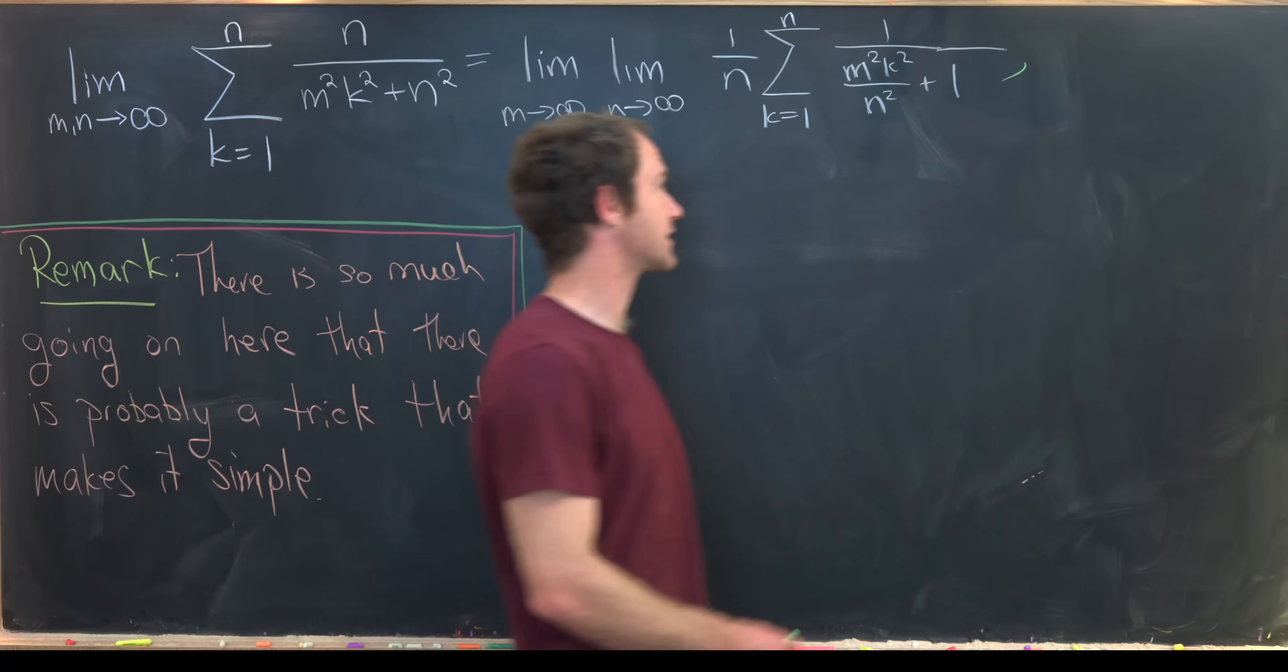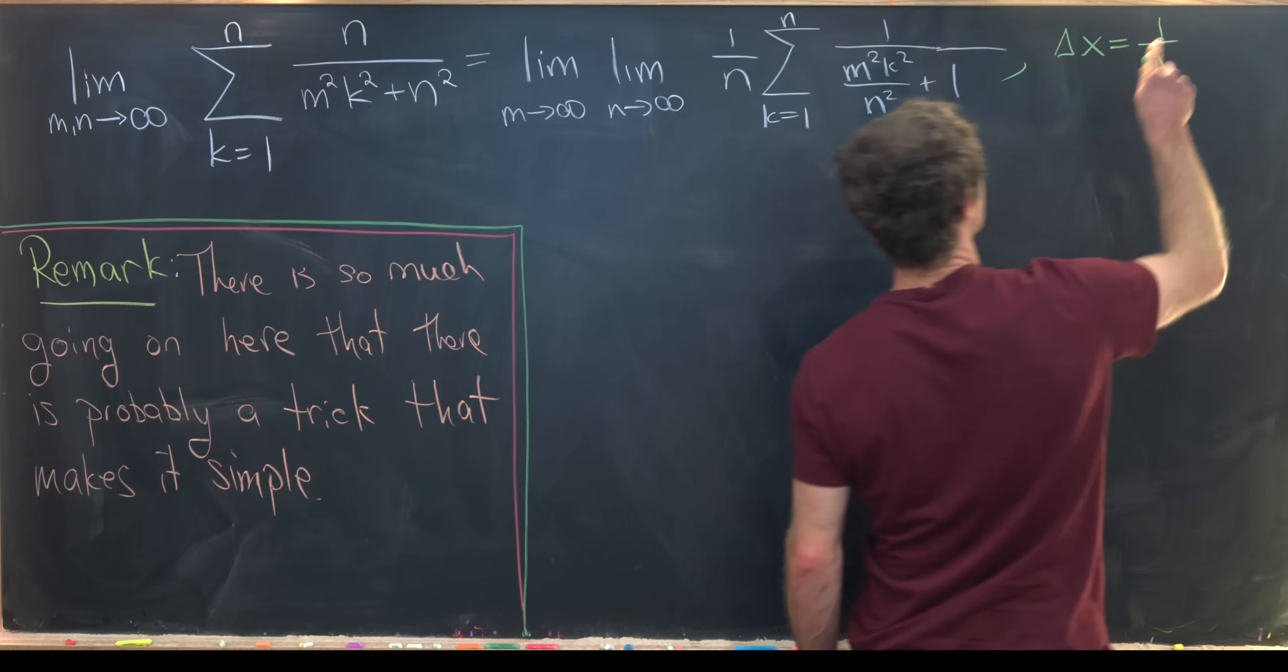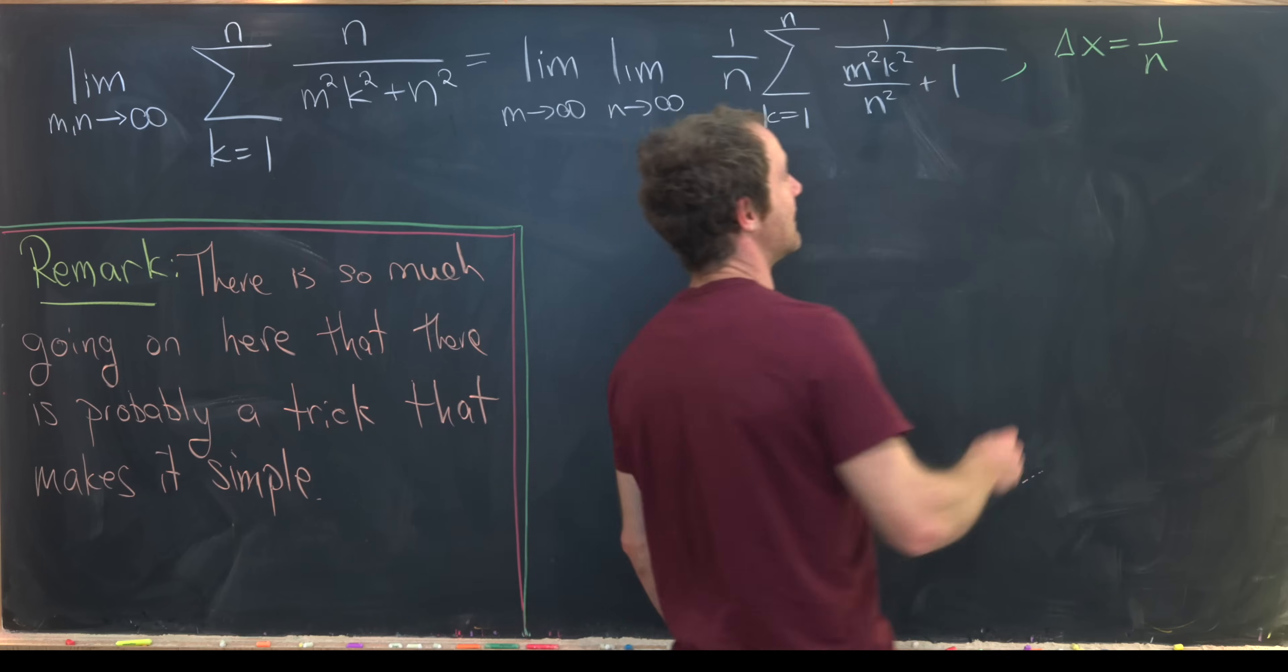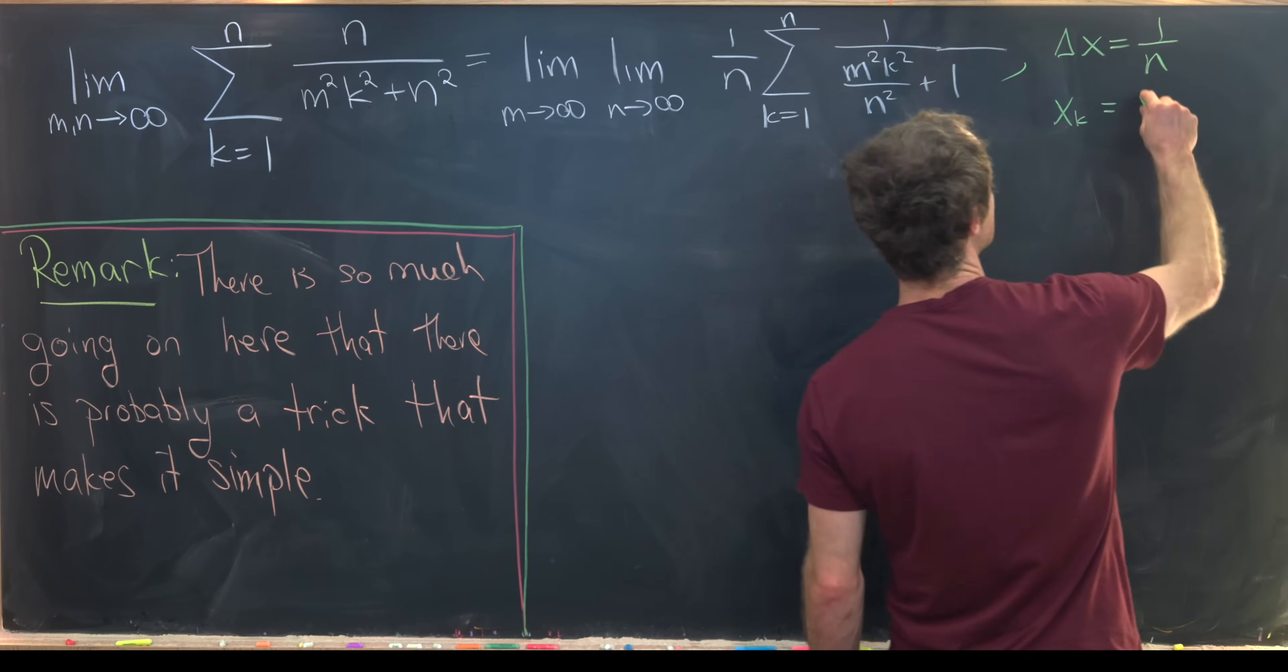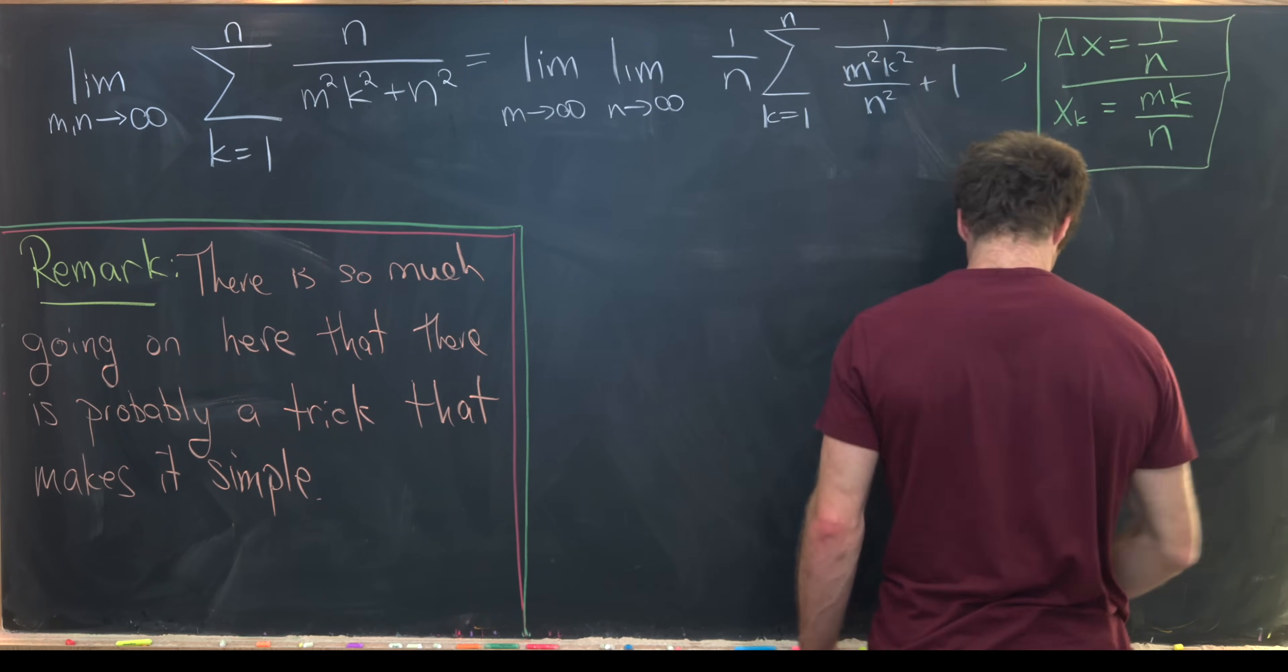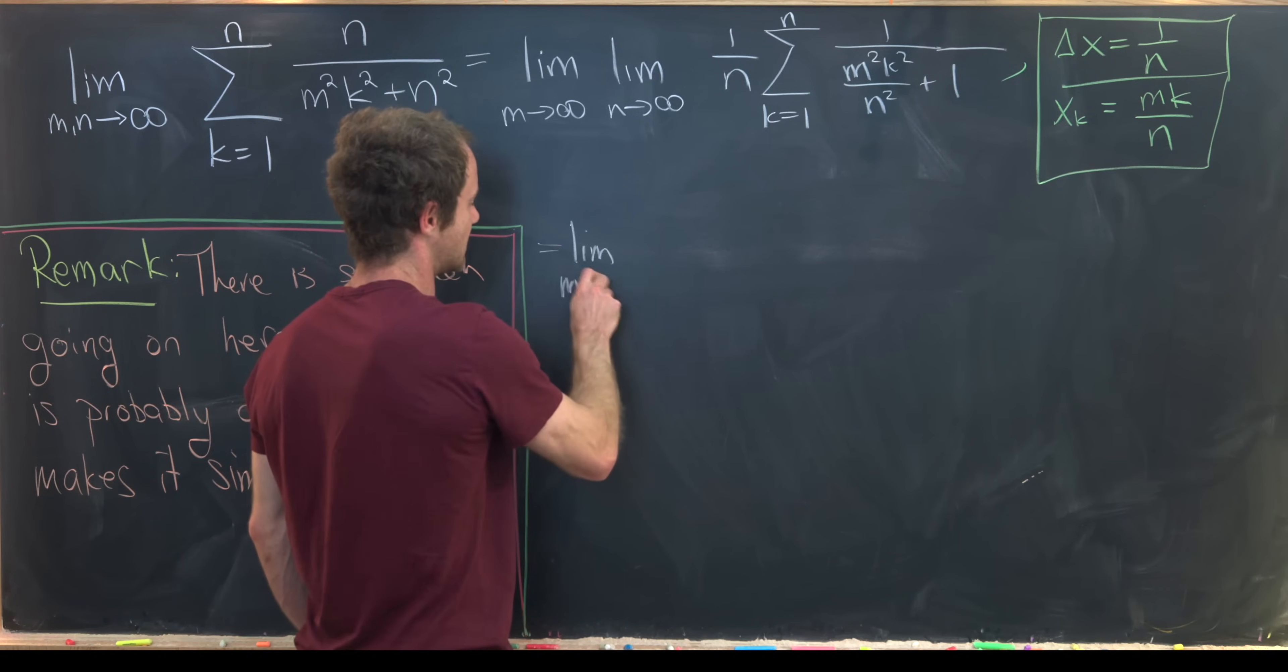Our delta x is probably going to be 1 over n. That's good to keep in mind. And then my x sub k looks like it's going to be m times k over n. Keeping that in mind, I can rewrite this as the limit as m goes to infinity of the limit as n goes to infinity of delta x times my sum.